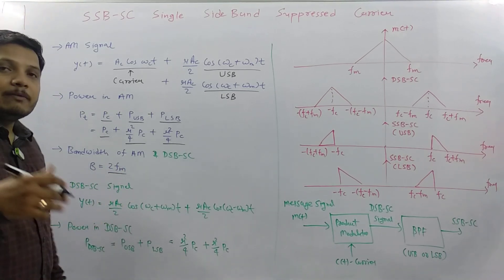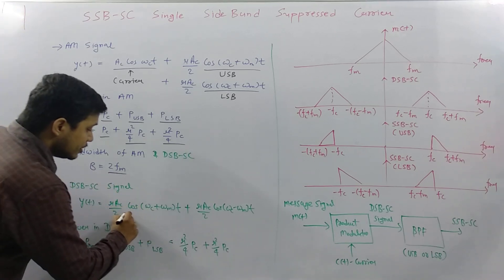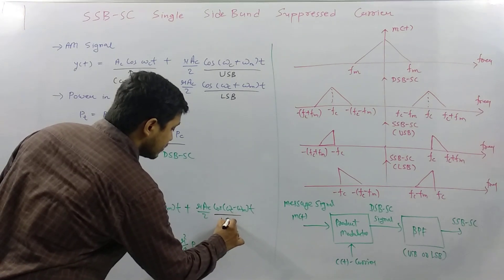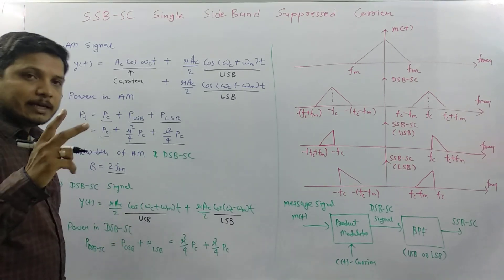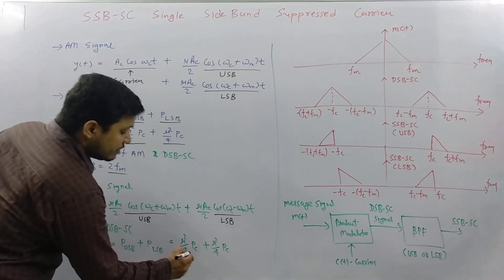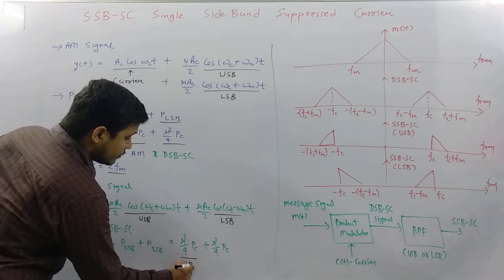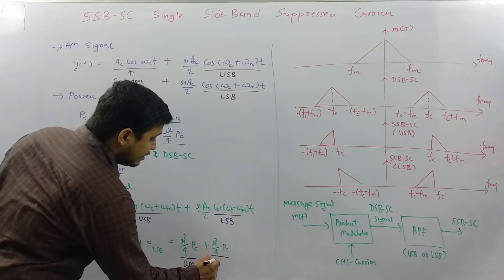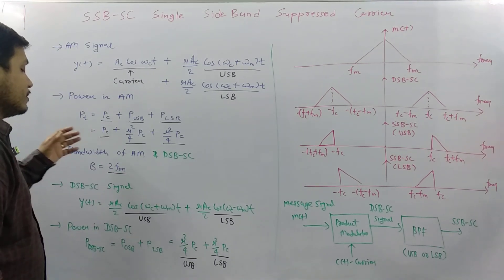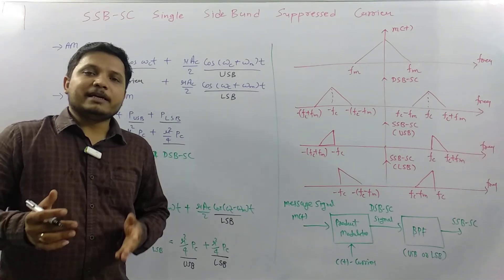In a DSB-SC signal, we send USB and LSB — two components: upper sideband and lower sideband. Power transmission for upper and lower sideband is mu-squared over 4 times PC each, and the bandwidth of DSB-SC is also 2FM.